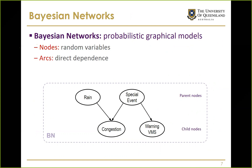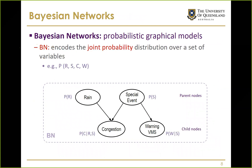In a simple example, we have four random variables: rain, congestion, special events, and warning VMS. Each can be considered as having two states — true or false — whether there is rain or not, congestion or not. The Bayesian network encodes the joint probability over this set of variables using the graph structure.